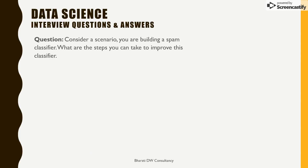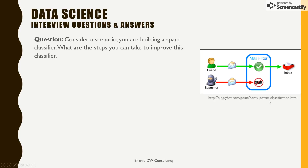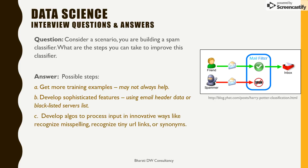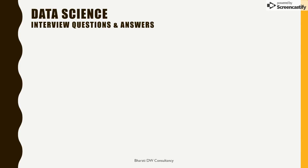The next is a scenario question: consider that you are building a spam classifier — what steps would you take to improve it? First, get away from the notion that getting more training examples is always going to help. Second, develop sophisticated features — look at innovative things like email headers, blacklisted servers, algorithms to process misspellings, recognize tiny URLs, and synonyms. These are the things which can help build a good spam classifier.